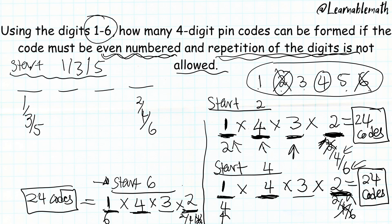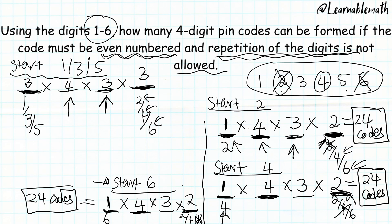For codes starting with one, three, or five: there are three choices for the first position. In the last position there's no clash — we can put two, four, or six, giving three choices. Two numbers will have filled two spaces from the six digits, leaving four choices for the third position and three choices for the second. So: 3 × 4 × 3 × 3 = 108 codes.